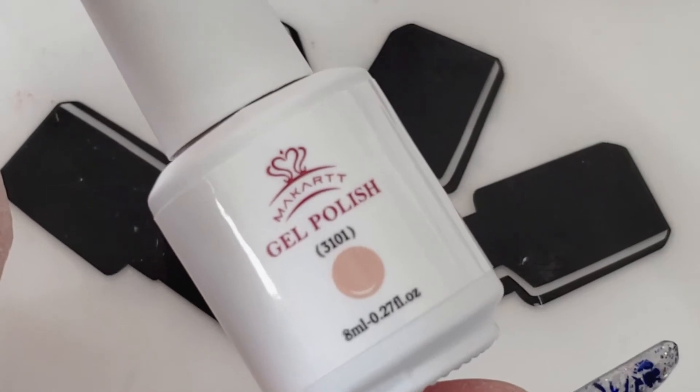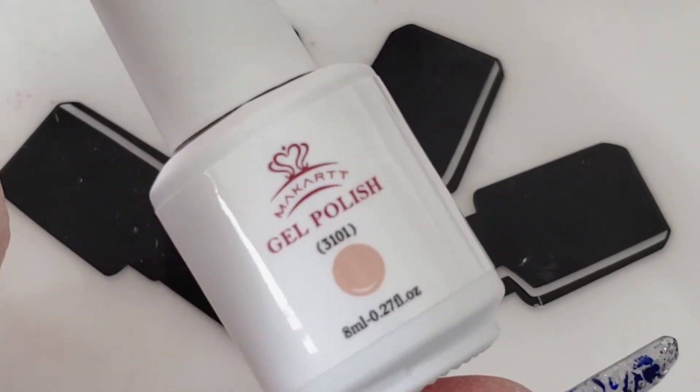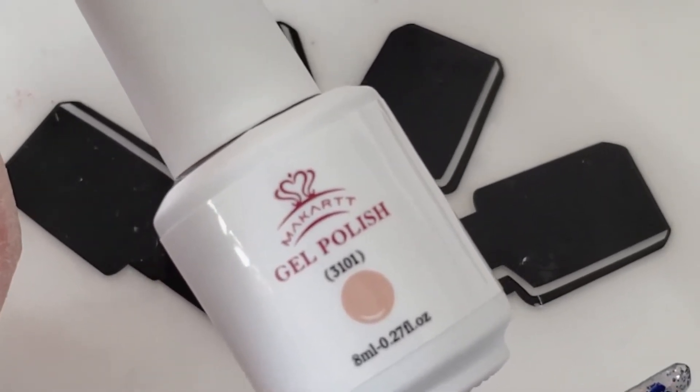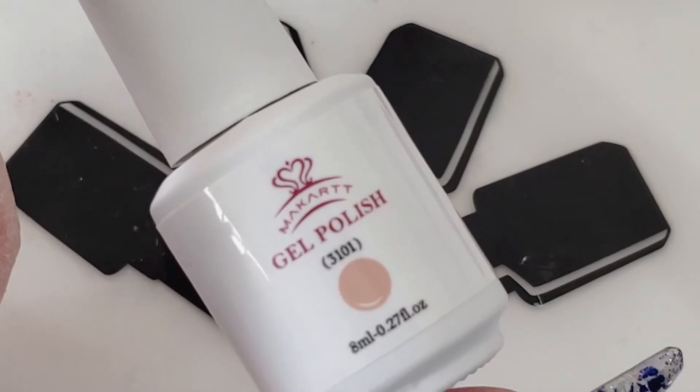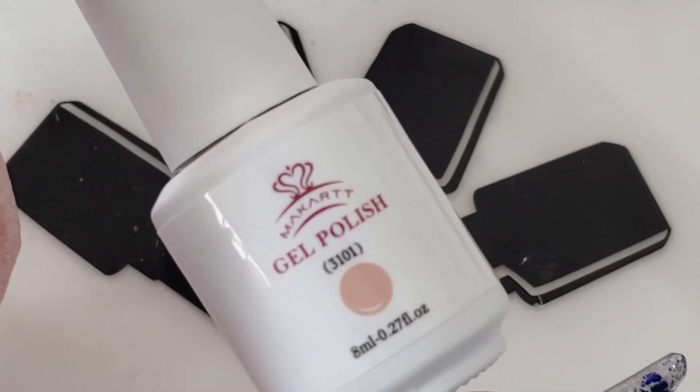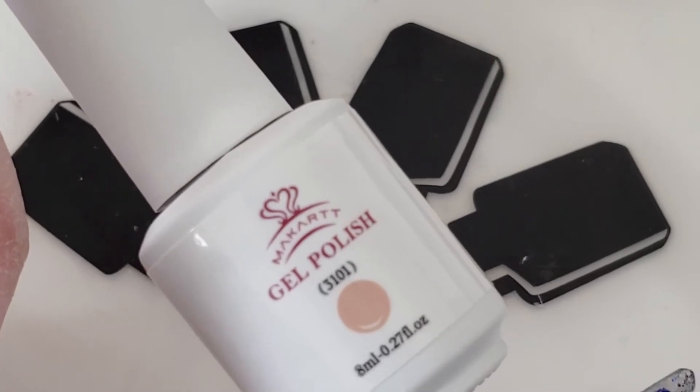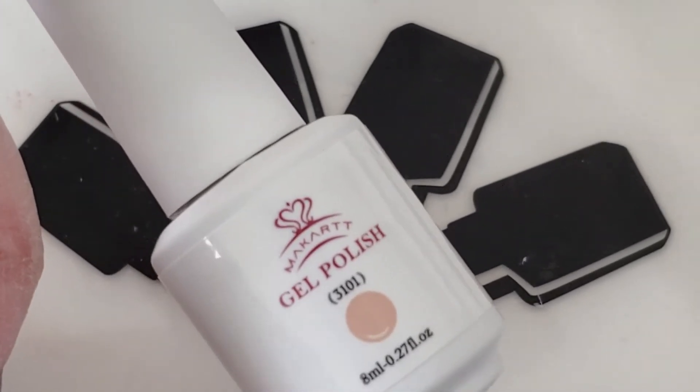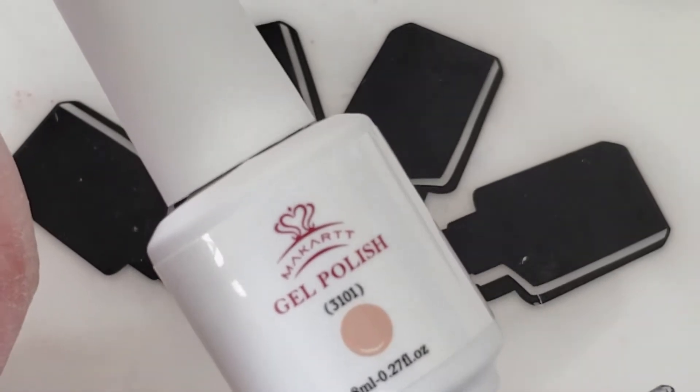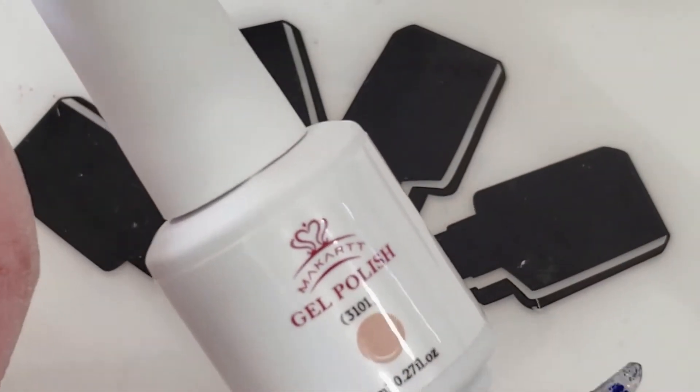Okay, this is the first color. This is 3101. Before I start swatching, I must say, these bottles are so hard to open. They are like literally screwed on super tight. So a trick that I figured out was to actually use your silicone mat or something for some grip. Because if you have long nails like this, it's really hard to open things. Anyways, let's get started.